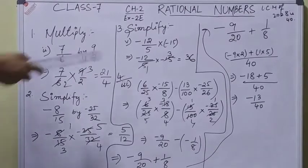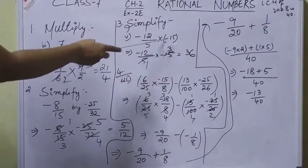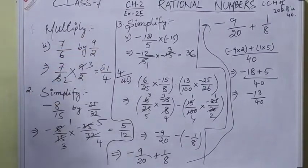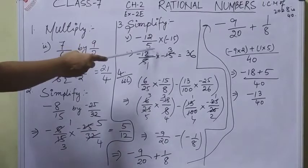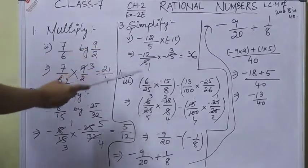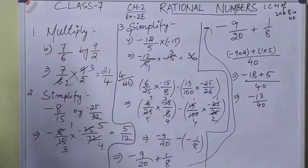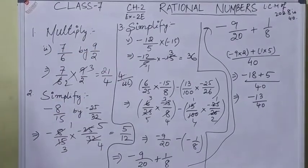Next, -12/5 into -15. Again, 5 and 15 have a common factor of 5, so you can cancel to get 3. 12 into 3 gives us 36. Since we have the negative sign, minus minus becomes positive.